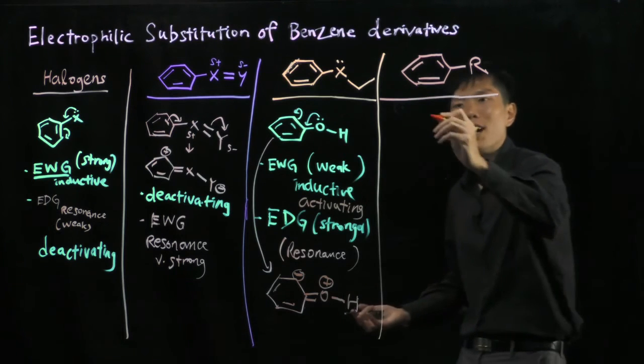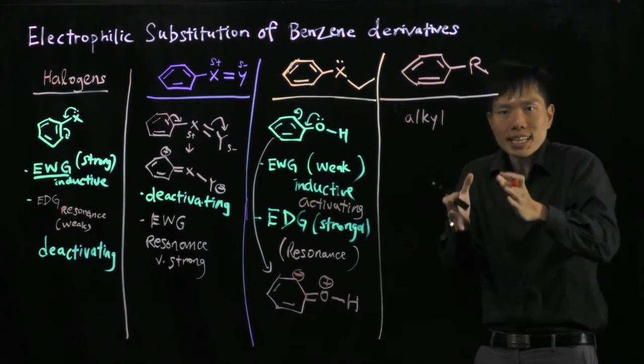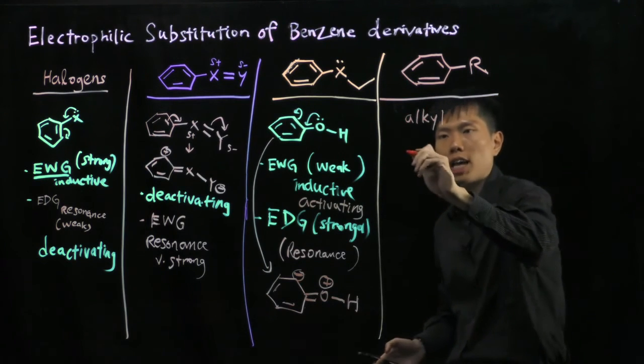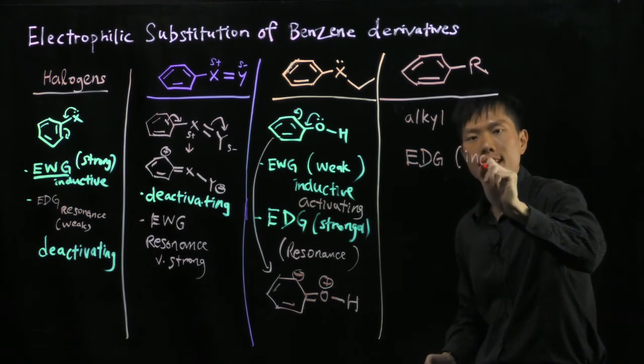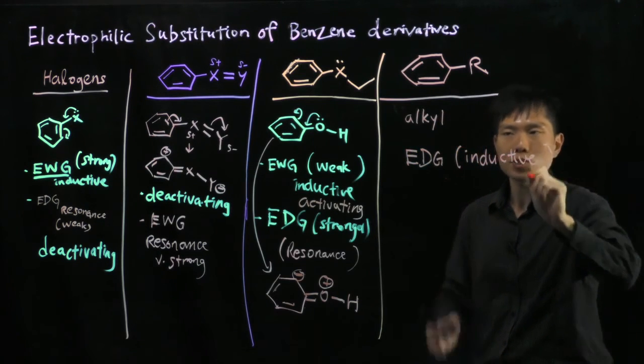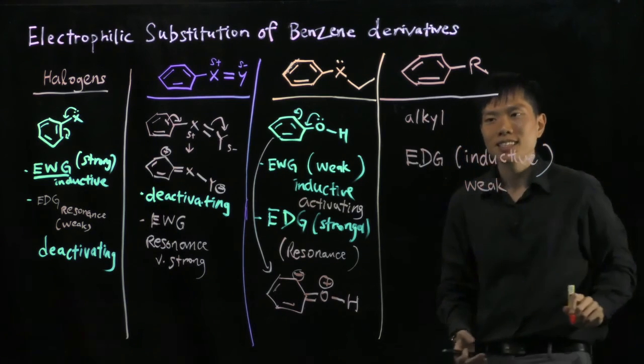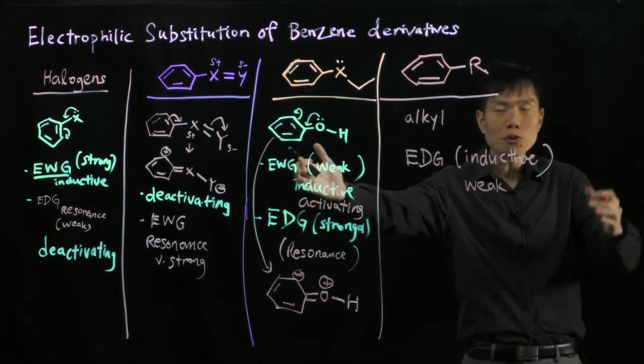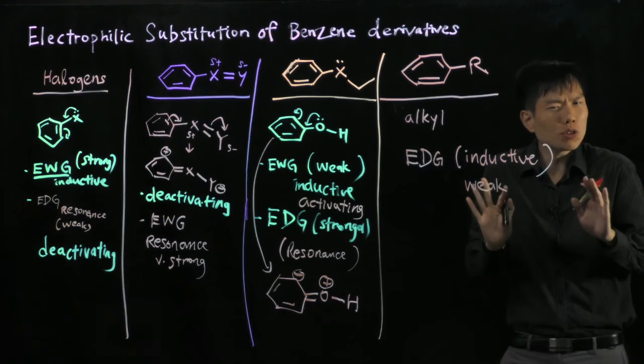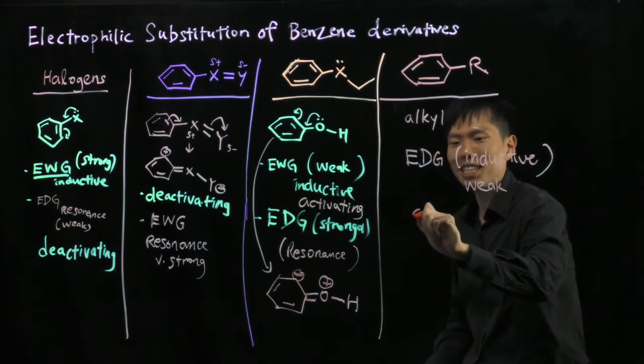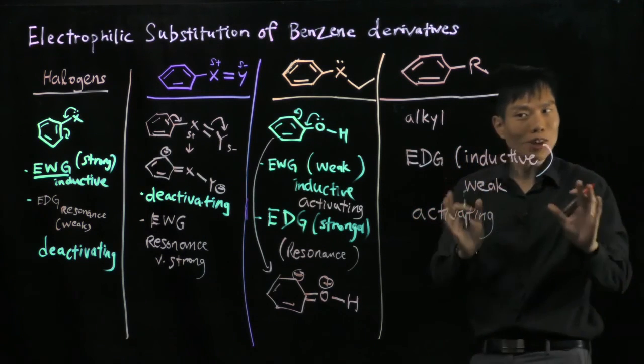Lastly our group, they are just alkyl groups. They do not have lone pairs, no electrons, but we know that they like to give up electrons, they just push. So they are electron donating inductive, because there's no lone pair, and this is weak. But since they do not have electron withdrawing group here, they are not electronegative, they do not pull, they only push. But even though when they push it's only a bit, still overall pushing, so it's activating but not that strong.